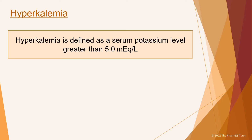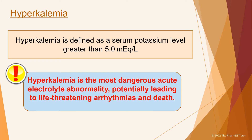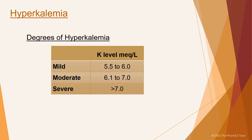Now let's talk about hyperkalemia. Hyperkalemia is defined as a serum potassium level greater than 5.0 MEQs per liter. Hyperkalemia is the most dangerous acute electrolyte abnormality, potentially leading to life-threatening arrhythmias and death. Potassium levels greater than 6.0 MEQs per liter are considered clinically significant. When potassium levels increase abruptly, clinical signs and symptoms may be obvious at serum levels of 6 to 7 MEQs per liter. Immediate and emergent treatment are required for potassium concentrations above 7.5 MEQs per liter, since severe muscle weakness and marked ECG changes are potentially life-threatening.